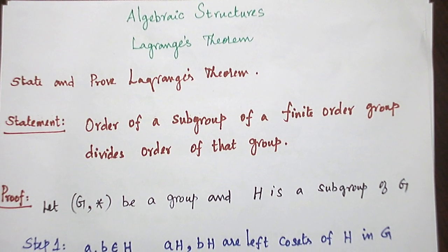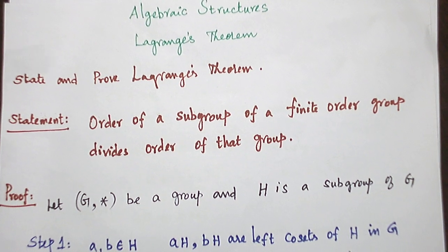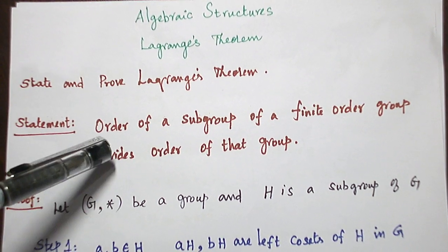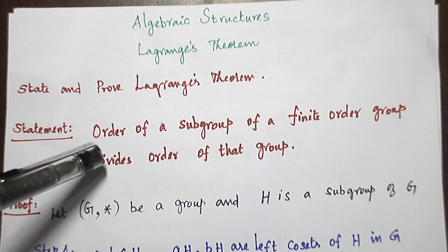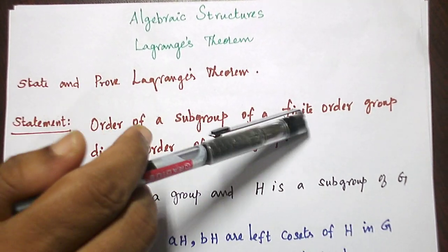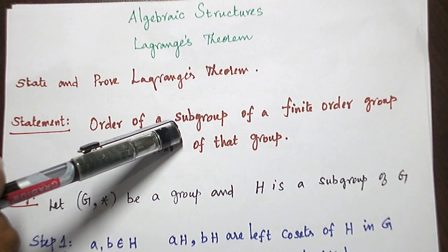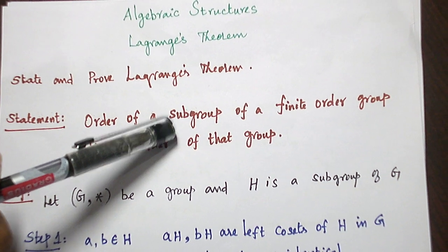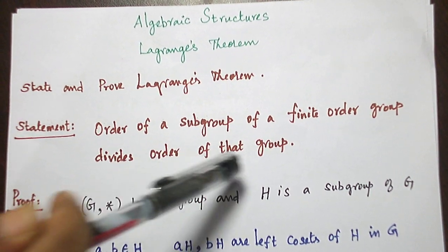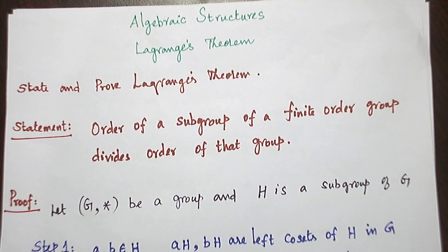The question statement is: prove Lagrange's theorem. The statement is this — sometimes they may ask the statement also. Suppose we take a finite order group; any subgroup's order will divide the order of that original group. This is the statement.